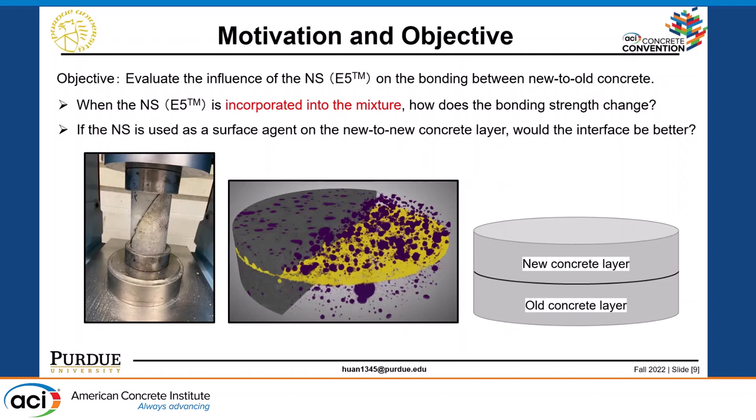The objective is to evaluate the nanosilicate influence on the concrete interface. We asked ourselves two questions: one is how does the bonding strength change, and the other, more interesting question is if we use this liquid-phase nanosilicate as a surface agent — just spread it on the surface of the old concrete layer and then pour the new fresh concrete — how will the interface be changed? Based on these two questions, we started our research, and here are the results.